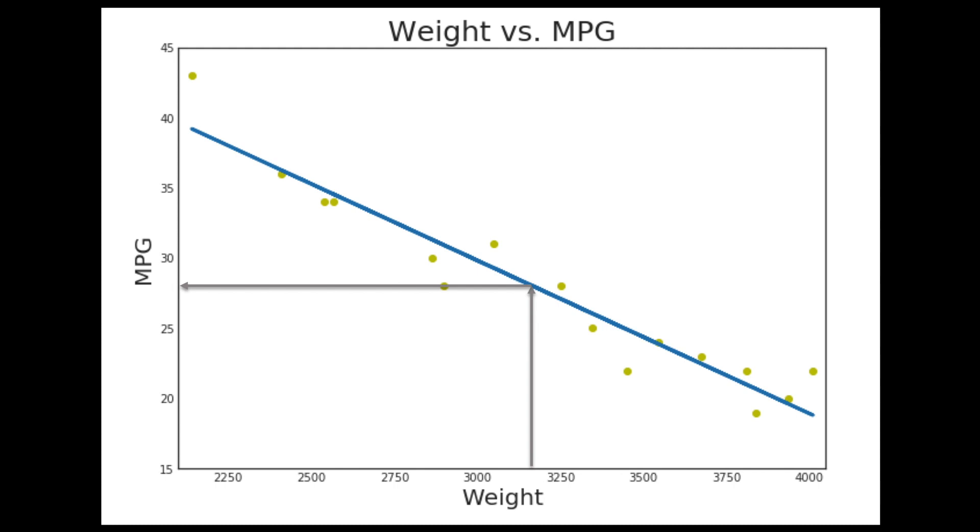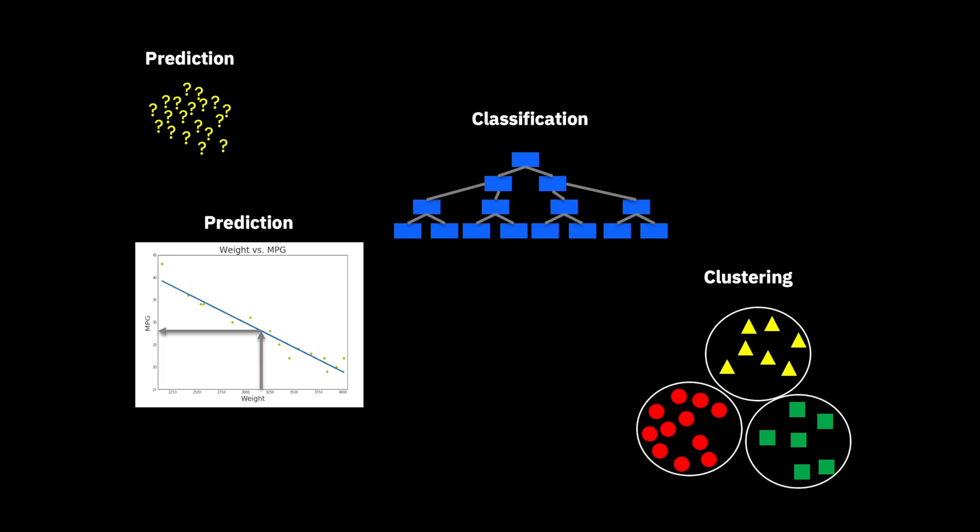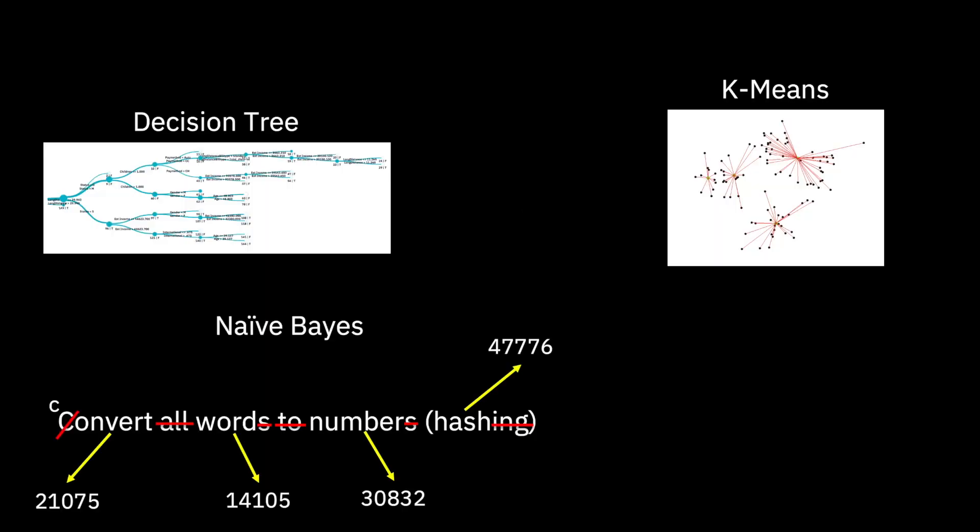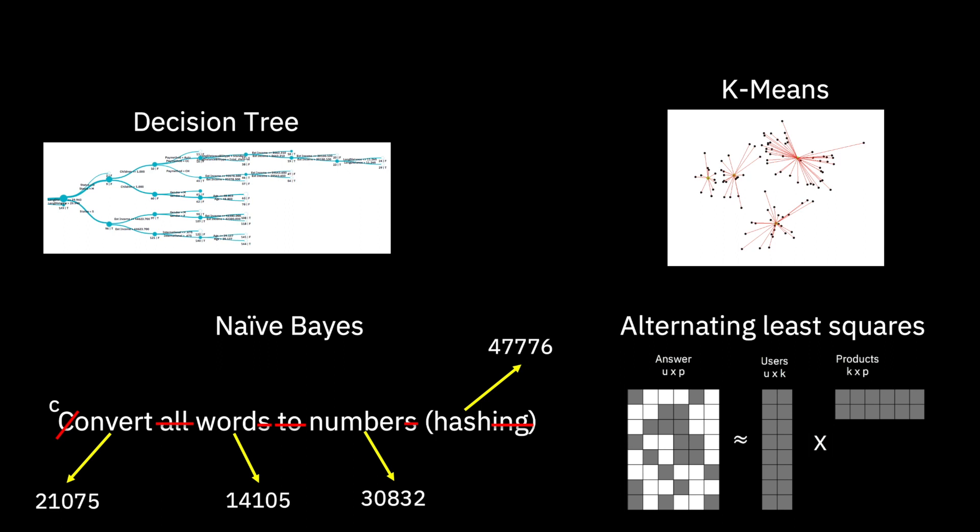We learned that machine learning is used mainly in areas of prediction, classification, and clustering. This is where we started looking at machine learning models starting with moving average and followed by decision trees, k-means, naive bayes, and the collaborative filtering algorithm using alternating least squares.